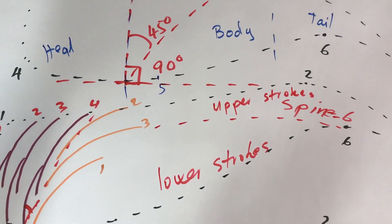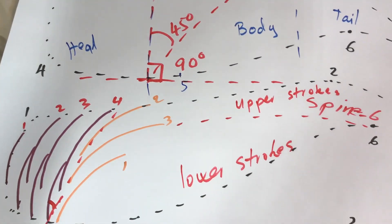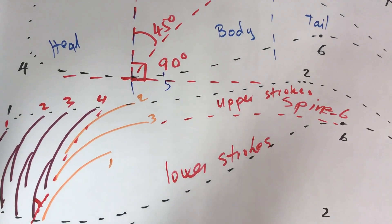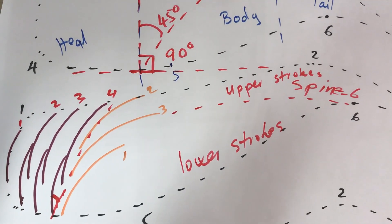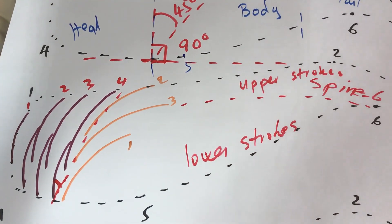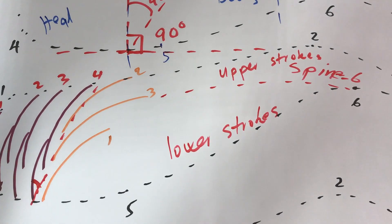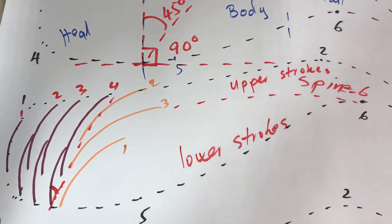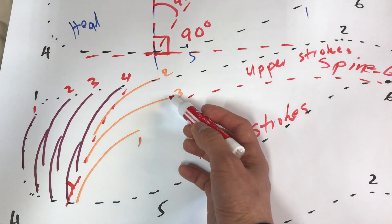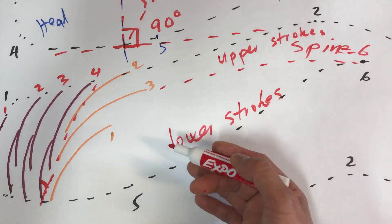A lot of masters and students just say, 'Let's do one, two, three,' but you have to ask the question: why are we doing that? Why do we need stroke one, two, and three? My answer is: we do transition stroke number three in order to divide the remainder of the brows into two sections.